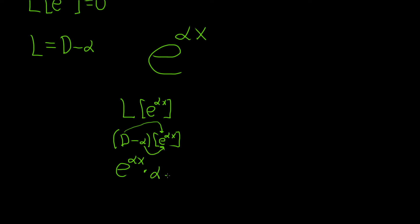And then you distribute this. You get minus alpha e to the alpha x. So this is the same thing as alpha e to the alpha x minus alpha e to the alpha x. And these cancel, and so you end up with 0. So we've shown that D minus alpha annihilates this function.